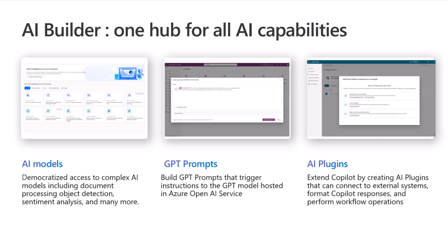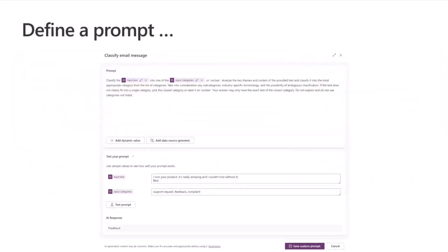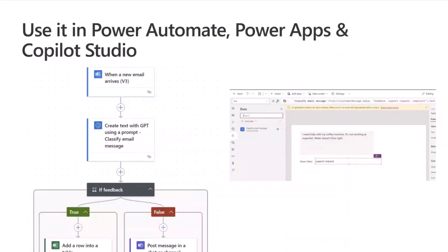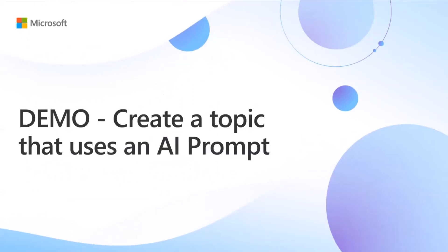We also have AI plugins, which are used to create extensions for Copilot for Microsoft 365. Zooming in on prompts — you can define a prompt that has one or more inputs, and you can even ground it in data from Dataverse. People can trigger that prompt from multiple places: Power Automate, which you can see on the left, or Power Apps, which you can see on the right. And now we can also use prompts in Copilot Studio. Let's show that in a demo.